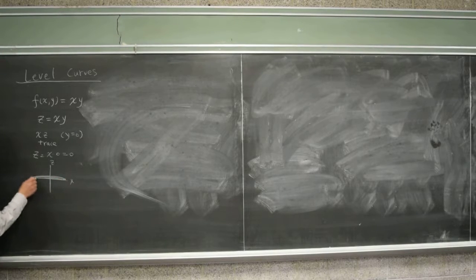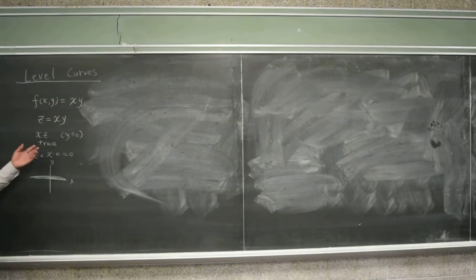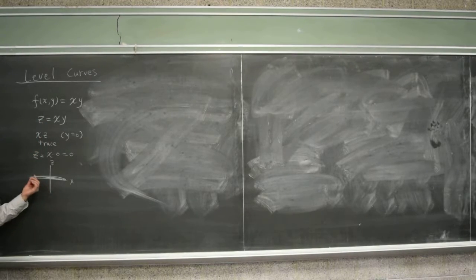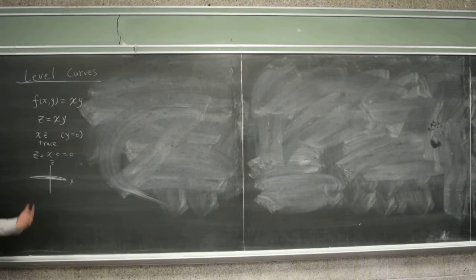See, there's nothing interesting here. And same thing happens for yz trace. If you set x as zero you again get this horizontal line.